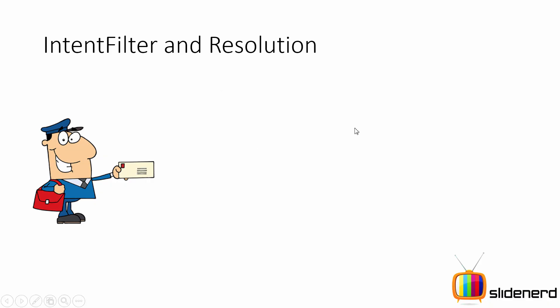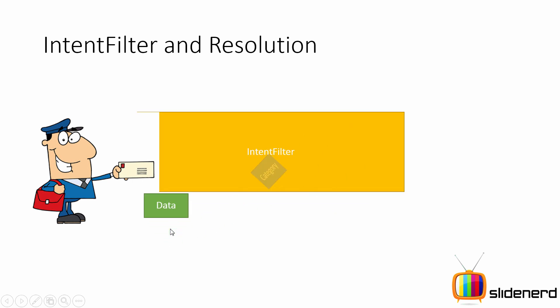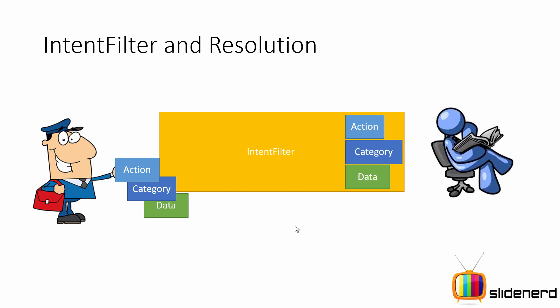As you know, intents are like messengers in Android — they run from one place to another and are responsible for delivering messages. On the left side you have this guy who is basically an intent, like a postman. On the right hand side you have something like an activity, a service, or a broadcast receiver. This intent wants to deliver its message to or call this activity, service, or broadcast receiver. However, there are some conditions that need to be met before such a call can happen.